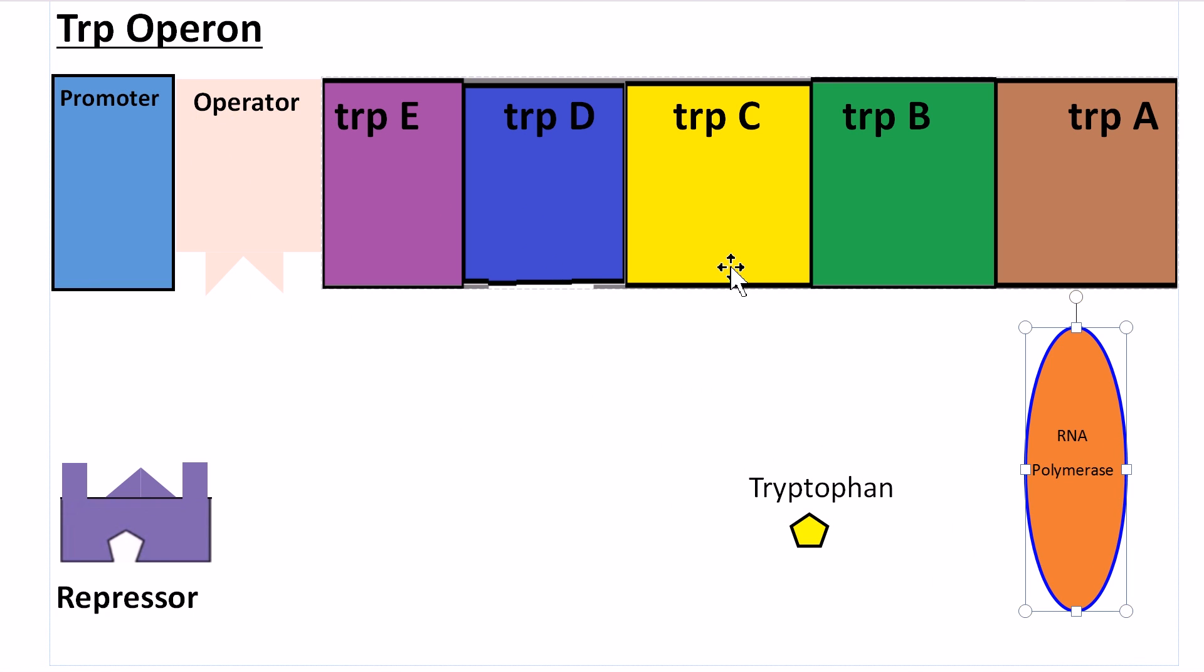The operator, which is the switch for the operon, and then the genes following. We also have the repressor protein over here, which was made from the regulatory gene trp R.